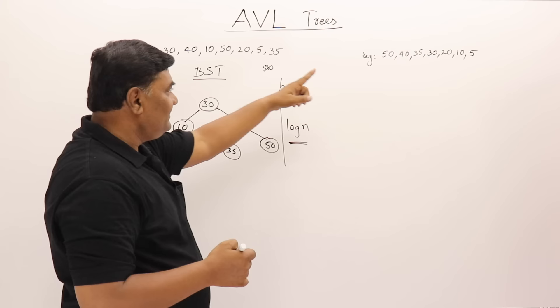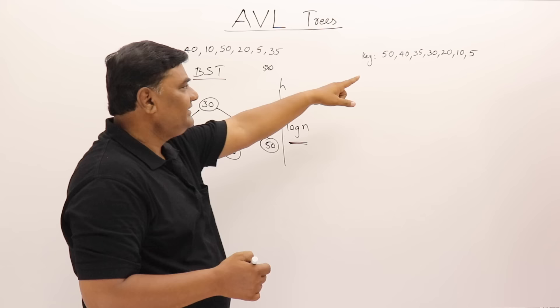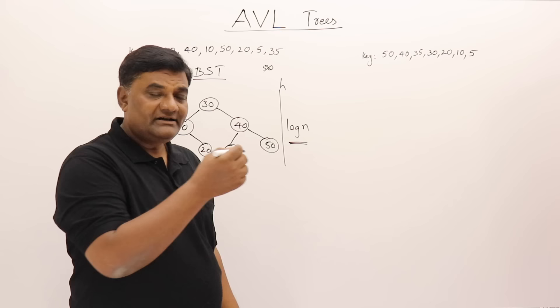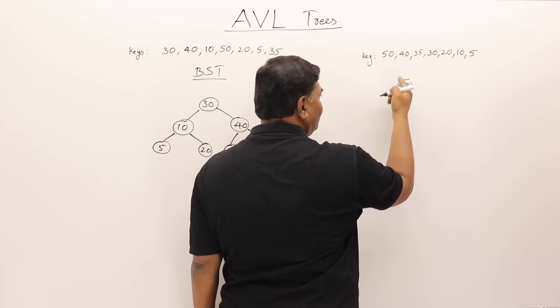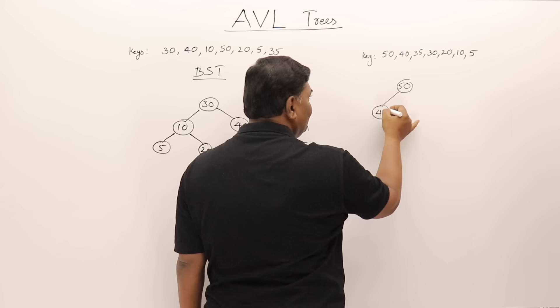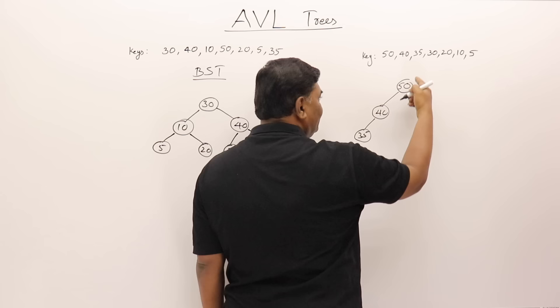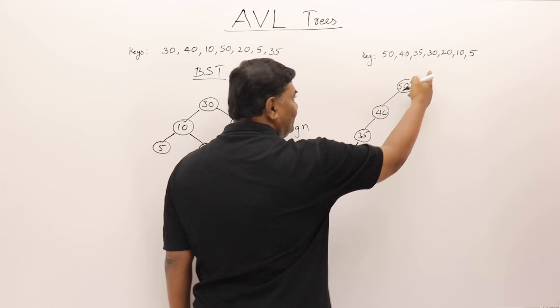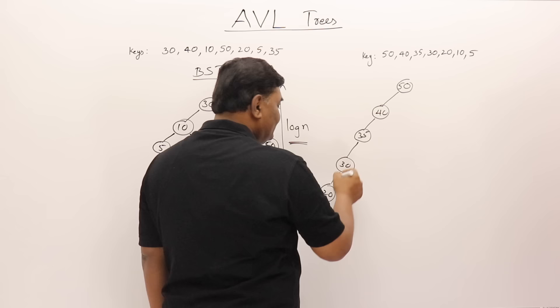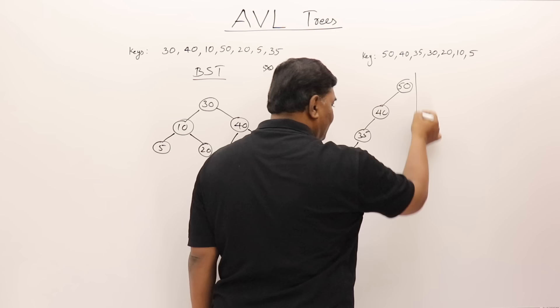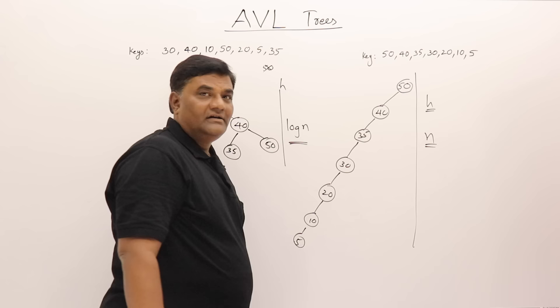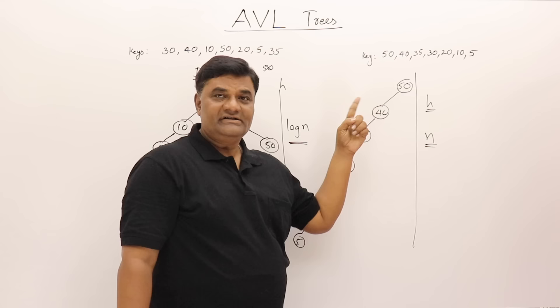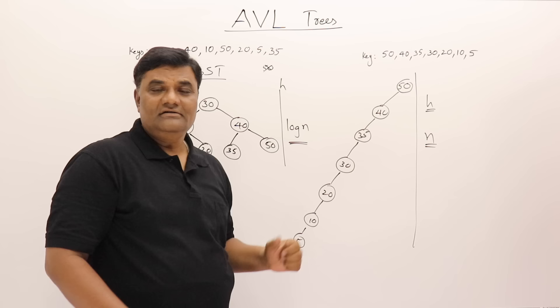Now taking the same keys in a different order: 50, 40, 35, 30, 20, 10, 5 — each element is smaller than the previous, so every insertion goes to the left. The resulting binary search tree has height n. This is the problem: the height of a binary search tree is not under our control.